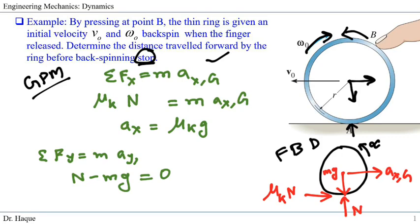Friction always acts opposite to the direction of motion, so we place it in the opposing direction. Plugging into ΣFx: friction force is μk·N and the acceleration is at the mass center. There are no other horizontal forces. We need to find N, so we check the y-direction equation.